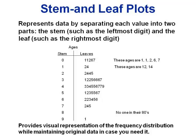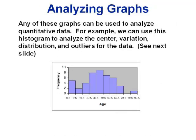Sometimes you'll see rows split in half if there are a lot of values in one group — for example, two rows both with a stem of four. Now that we've talked about the different ways to display your data, we need to talk about how to analyze those displays to get information about center, variation, distribution, and outliers.